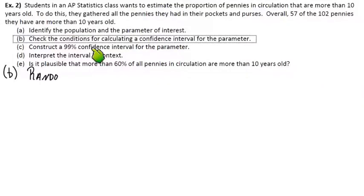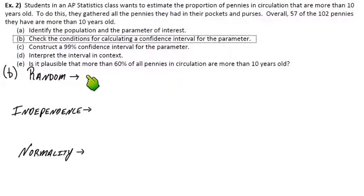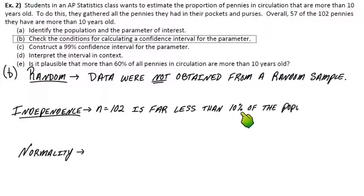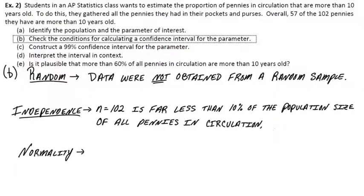So we've got our population, we've got our parameter of interest. Part B says to check the conditions for calculating a confidence interval for the parameter. So we know we've got three conditions. Random, independence, and normality. Those are the three things we need to verify. For starters, well it says the data were not obtained randomly, they just grabbed the stuff out of their pockets and purses. So that condition looks like we can't really trust. We could try to assume that their personal collection of pennies represent a random sample, but in general they weren't randomly obtained from that larger population that we specified. For independence we should be pretty safe. They've only got 102 pennies in their sample and that's far less than 10% of the population size of all pennies in circulation. So we should be pretty safe there for the 10% condition. So we can say the 10% condition is met.